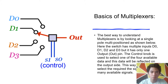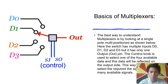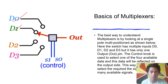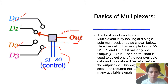The basics of a multiplexer: as you can see in this diagram, there are many inputs — D0, D1, D2, and D3 — and only one output. There is also a controller or select input.